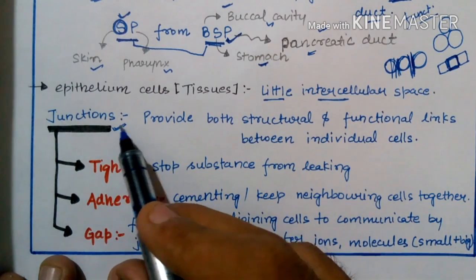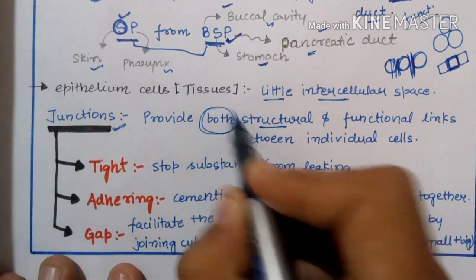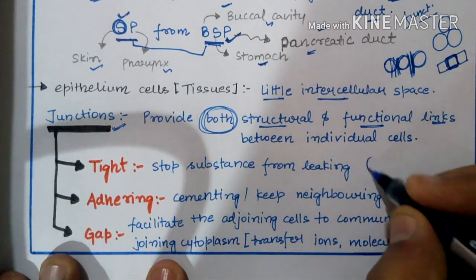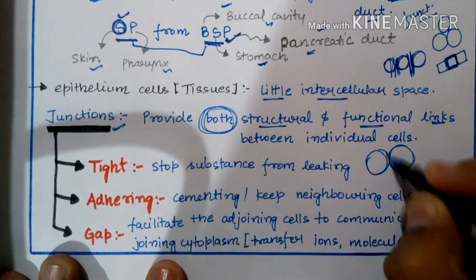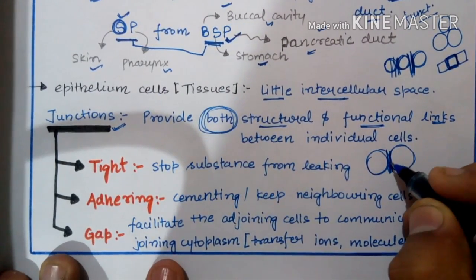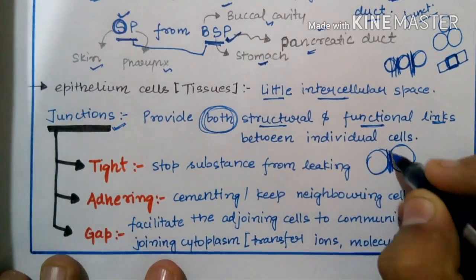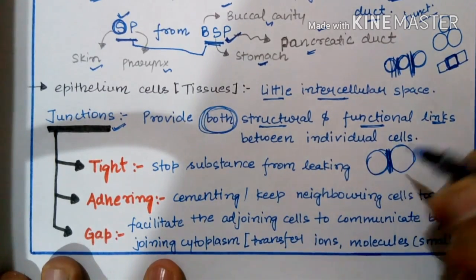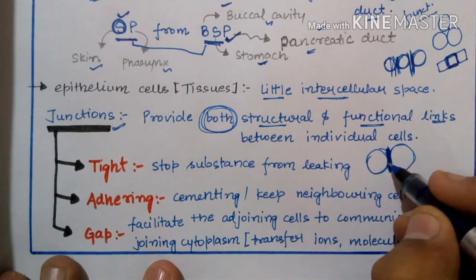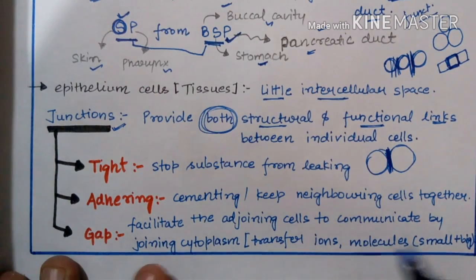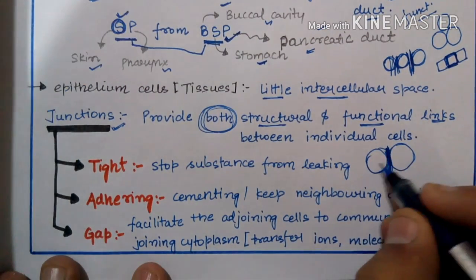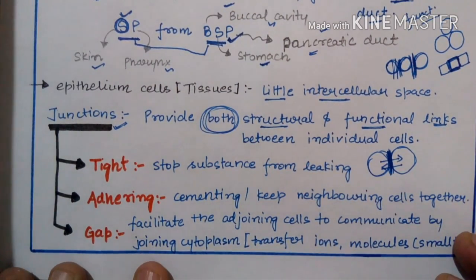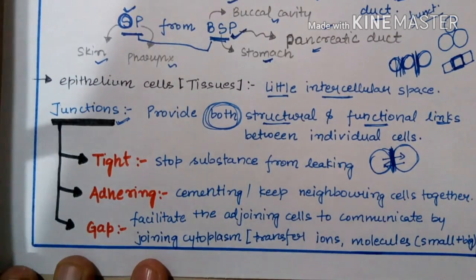The function of junctions is to provide both structural and functional links between individual cells. An intercellular junction between two cells provides both structural components and various functional roles. For example, a gap junction has the function of transferring different ions or small molecules from one cell to another cell.